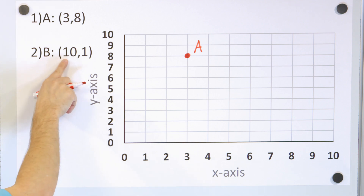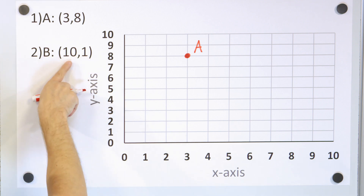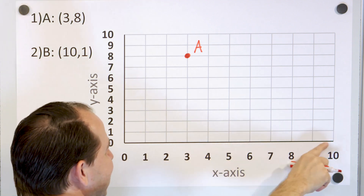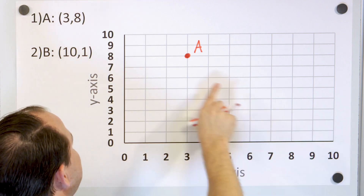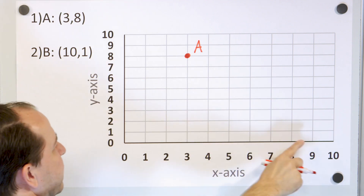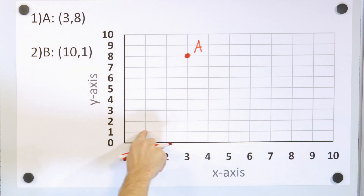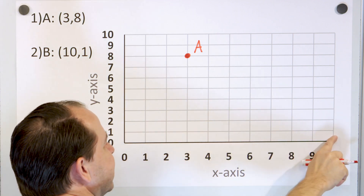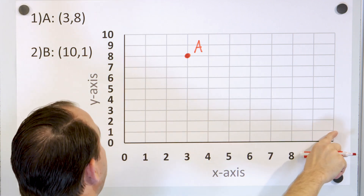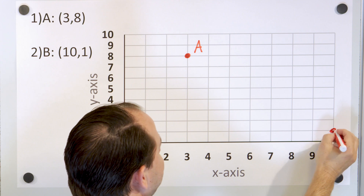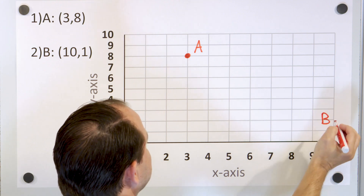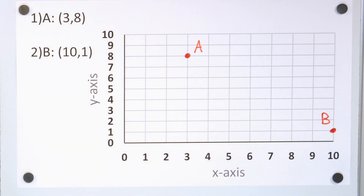What about point B? It's 10 comma 1. The x value is always first, so x equals 10, and then the y value is 1 — it just goes up to 1 right here. So it's 10 for x and 1 for y. That means the point goes right here, and that is point B.